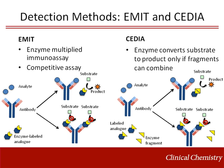Two other types of enzyme detection include EMIT and CEDIA. An enzyme-multiplied immunoassay, or EMIT, uses an enzyme-labeled analog that competes with endogenous analyte binding to a test antibody. When the antibody binds the enzyme-labeled analog, it is unable to convert substrate to product. The change in enzymatic activity is proportional to the concentration of the analyte in the sample, with high concentrations having high enzyme activity.